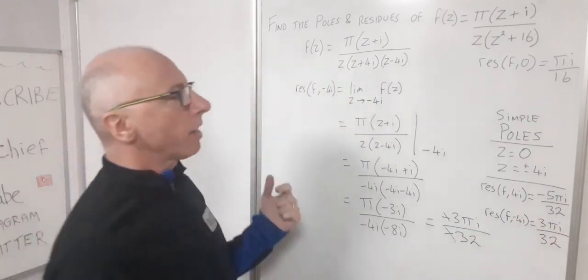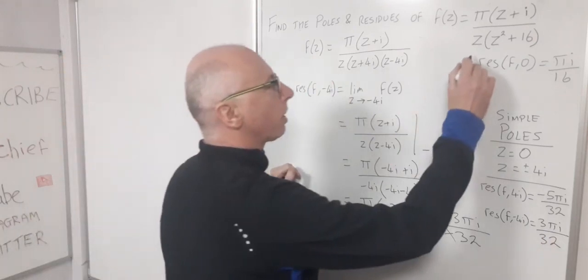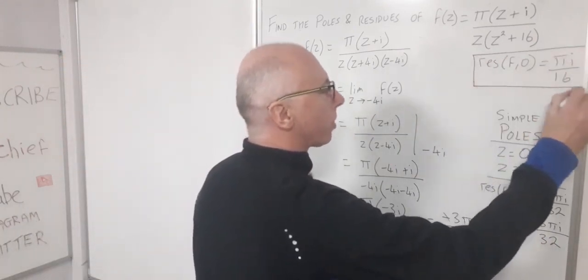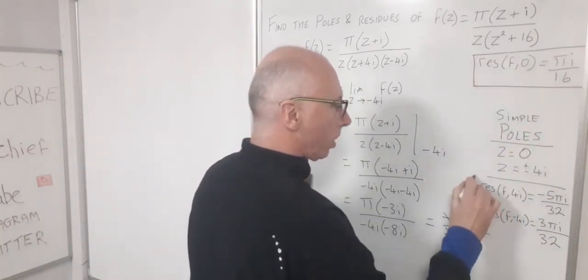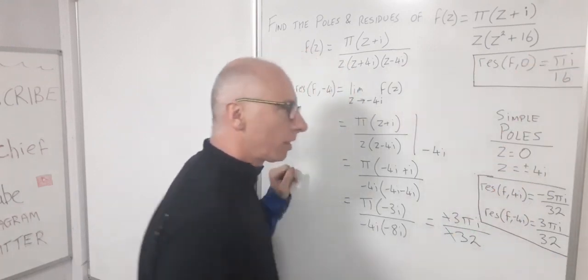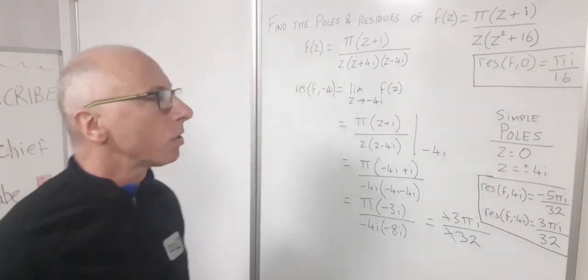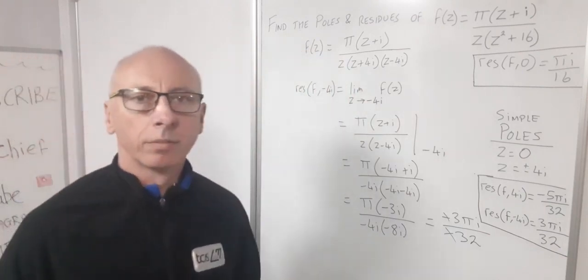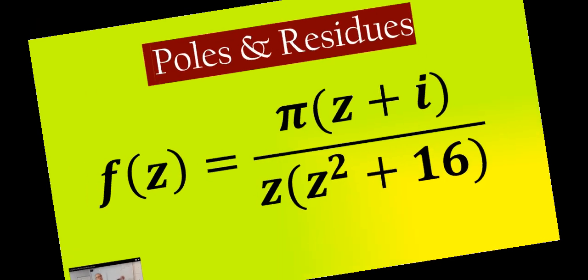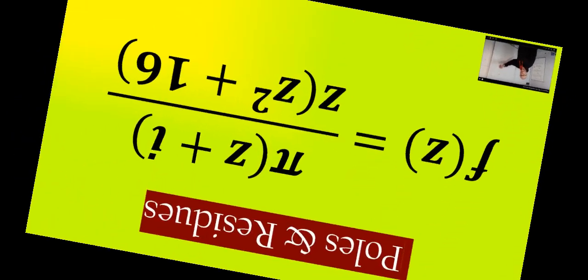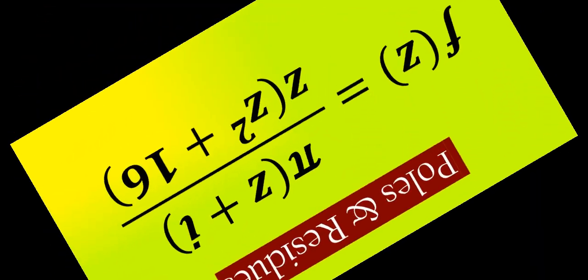So those are our three residues, all at simple poles, but each giving a different value. That's how we wrap it up.